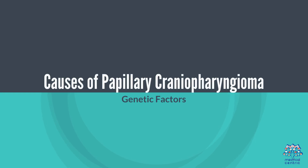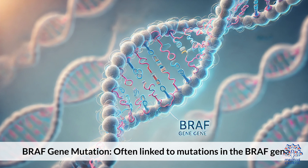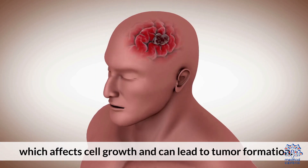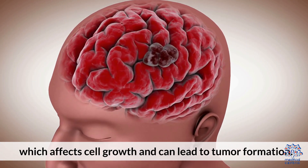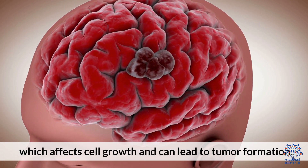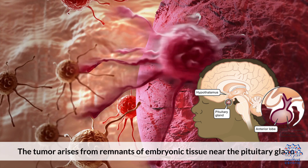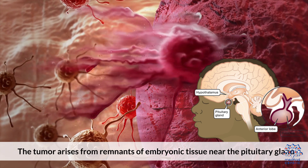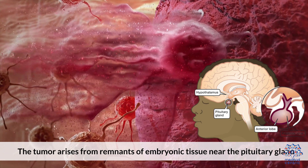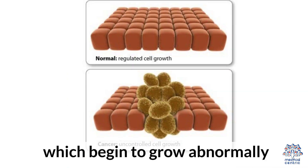Causes of papillary craniopharyngioma. Regarding genetic factors, it is often linked to mutations in the BRAF gene, which affects cell growth and can lead to tumor formation. In terms of developmental origin, the tumor arises from remnants of embryonic tissue near the pituitary gland, which begin to grow abnormally.